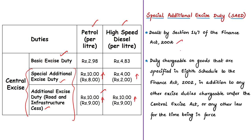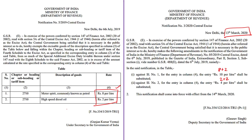The special additional excise duty is dealt with by Section 147 of the Finance Act of 2002. It is the duty chargeable on goods specified in the 8th Schedule to the Finance Act of 2002 — petrol and diesel are among them. This duty shall be in addition to any other excise duty chargeable under the Central Excise Act or any other law in force, which is why we also have the road and infrastructure cess.